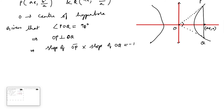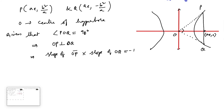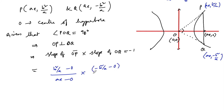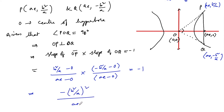The slope of OP: O is at (0, 0) and P is at (ae, b²/a), so slope of OP equals (b²/a − 0) upon (ae − 0). The slope of OQ: Q is at (ae, −b²/a), so slope of OQ equals (−b²/a − 0) upon (ae − 0). Multiplying these slopes gives (b²/ae)² with a negative sign, which equals −1.